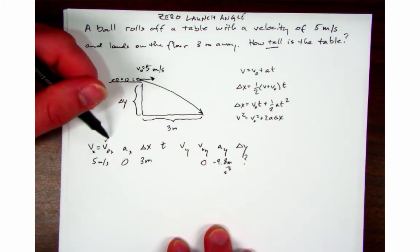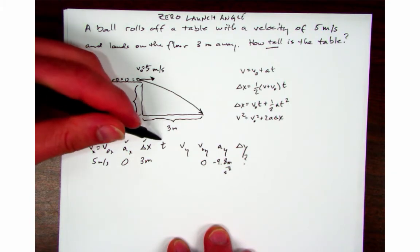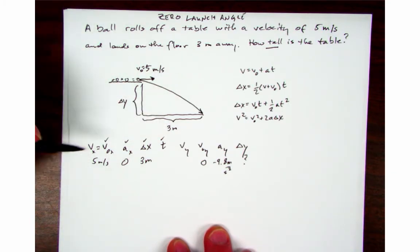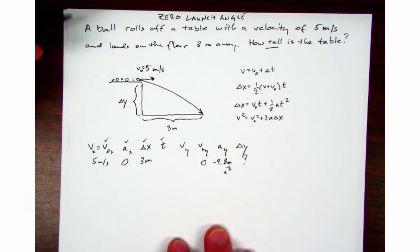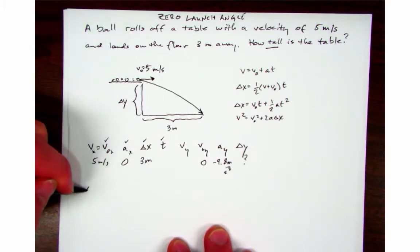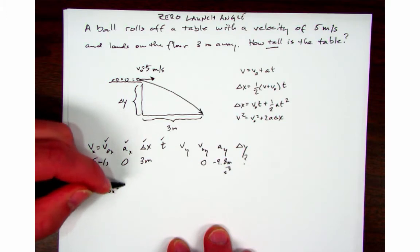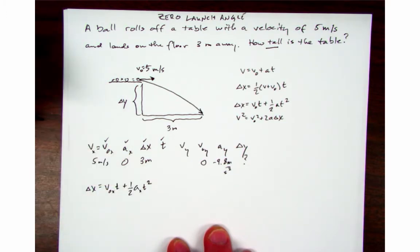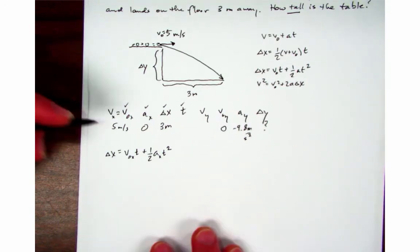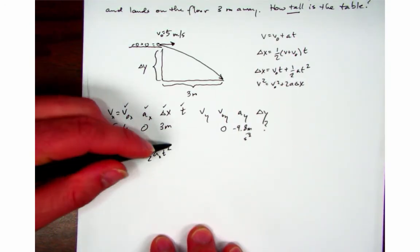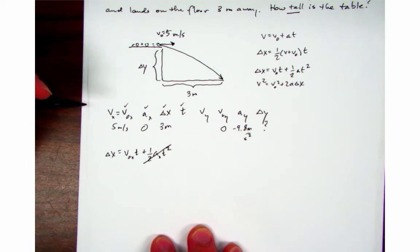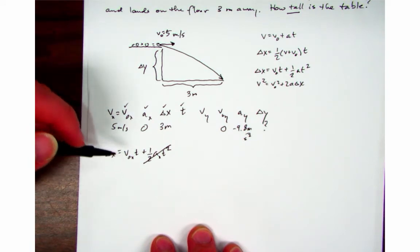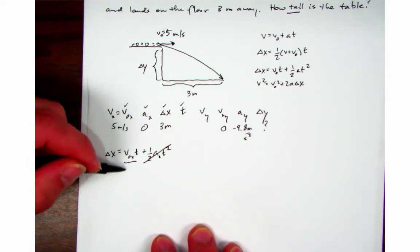So I look over here, I've got v naught x, a_x, delta x, and t. So I'm going to use equation number three, this one right here. So I write down delta x equals v naught x times t plus one half a_x t squared. a is zero so that entire term goes away and I want to solve for time.